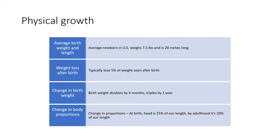Growth is more rapid in infancy than during any other period after birth. Infants typically double their birth weight by four months and triple it by the first year. If this rate continued through childhood, a typical 10-year-old would be nearly as long as a jumbo jet. Right after birth, babies lose about 5% of their weight, and we also see a change in proportions — the head is 25% of body length at birth but only 20% by adulthood.